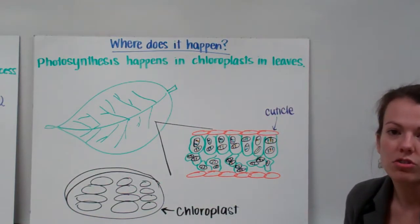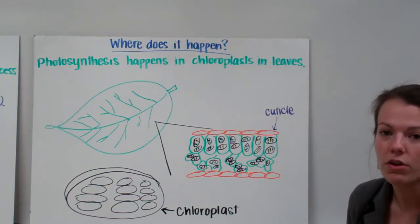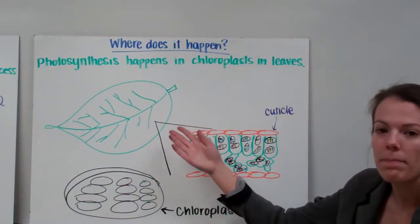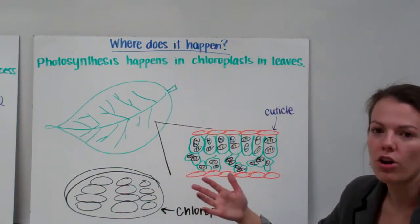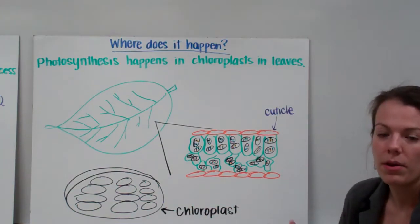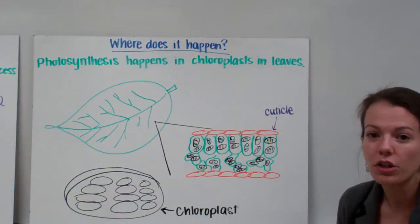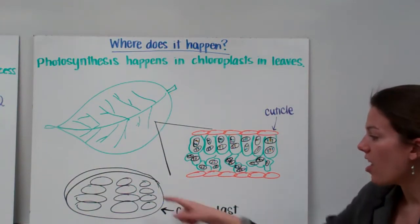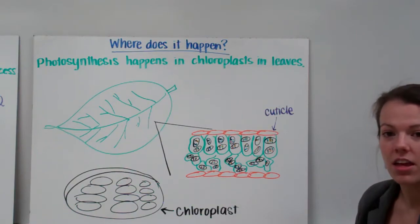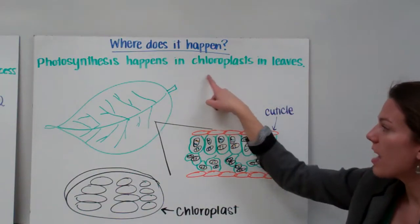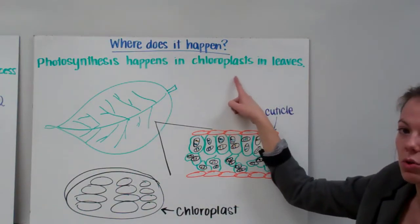If a plant wanted to perform more photosynthesis or was better adapted to perform photosynthesis, it would probably have bigger, broader leaves. The bigger the leaves are, the better they're able to perform photosynthesis. Also, if you're looking at a cell and notice that it has a lot of chloroplasts inside of it, you'll know that those cells are specialized for photosynthesis because photosynthesis happens in those chloroplasts.